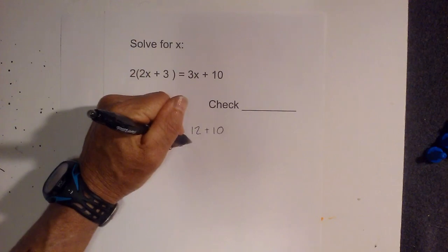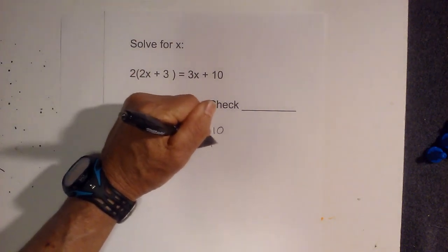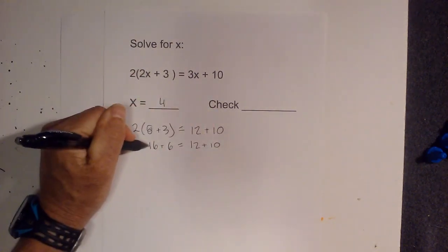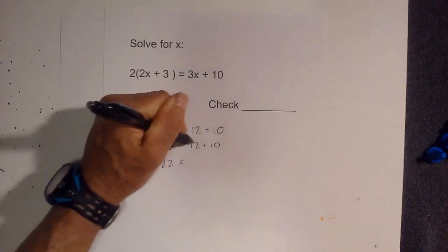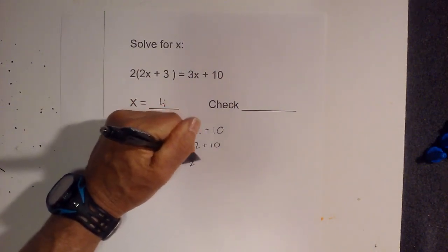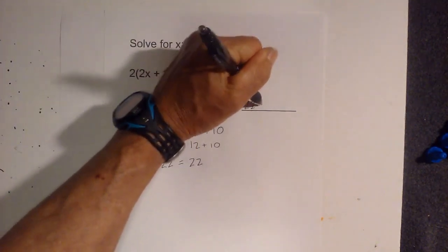16 plus 6 is 22, equals 12 plus 10 is 22. So both sides are 22.